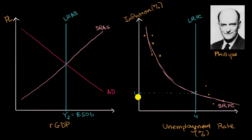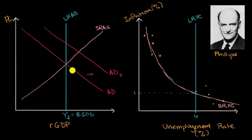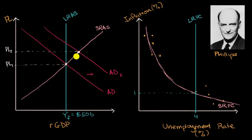Now suppose there's a demand shock — the government decides to stimulate the economy beyond its current level, increasing spending. The aggregate demand curve shifts to the right — aggregate demand 2. We move from the original equilibrium at full employment output and price level 1 to a new equilibrium. Suppliers, seeing higher demand, charge more, so the price level rises to price level 2, and we are now producing above full employment output — maybe $60 billion. How does this appear on the Phillips curves?